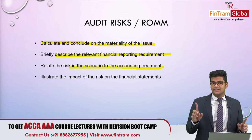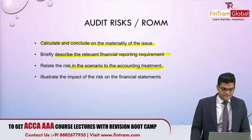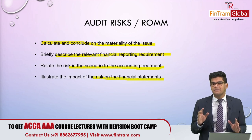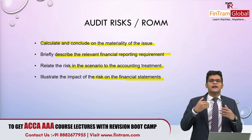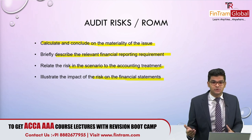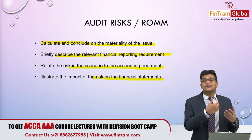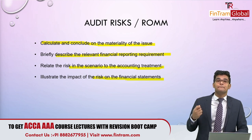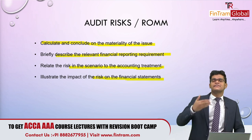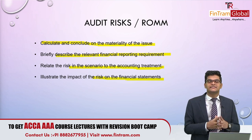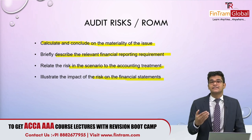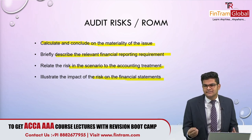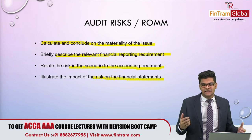Relate the risk in the scenario to the accounting treatment — state whether management has done everything appropriately or whether there is a risk of non-compliance with the accounting standard. Finally, and this is really important: state the impact of the risk on the financial statements when writing audit risk or risk of material misstatement. When writing business risk, you state the impact on the organization and how it cannot achieve its objectives. Whereas when writing audit risk, you state the impact on the financial statements from an accounting perspective — will the asset be overstated? Will the liabilities be understated? The only additional difference: when asked for risk of material misstatement, do not provide detection risk.